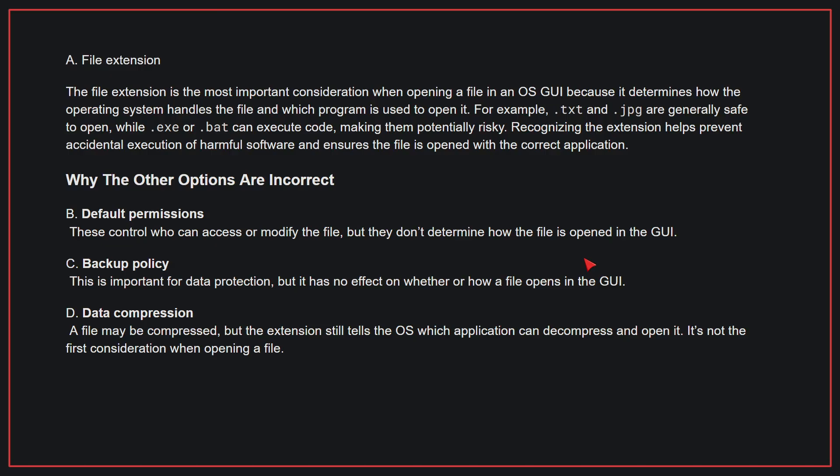Why the other options are incorrect: B, default permissions — these control who can access or modify the file, but they don't determine how the file is opened in the GUI. C, backup policy — this is important for data protection, but has no effect on whether or how a file opens in the GUI. D, data compression — a file may be compressed, but the extension still tells the OS which application can decompress and open it. It's not the first consideration when opening a file.